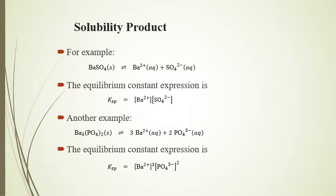Let's look at a couple more examples. First, barium sulfate, BaSO4, breaks down into Ba²⁺ and SO4²⁻ ions. The equilibrium constant Ksp would be equal to [Ba²⁺] times [SO4²⁻].